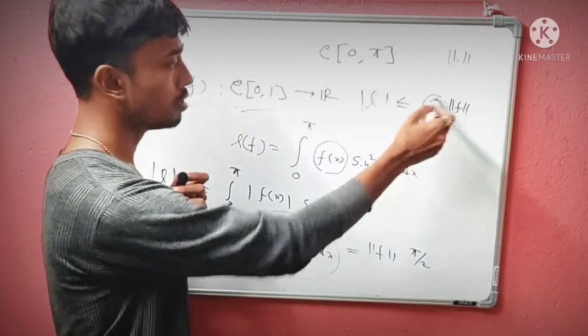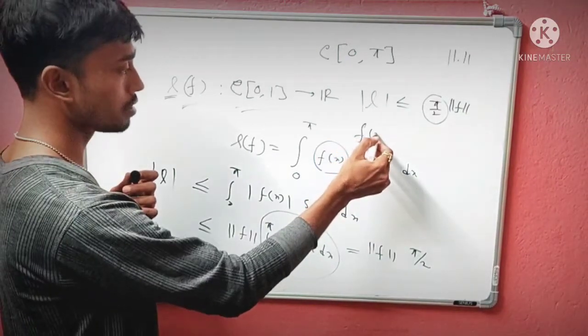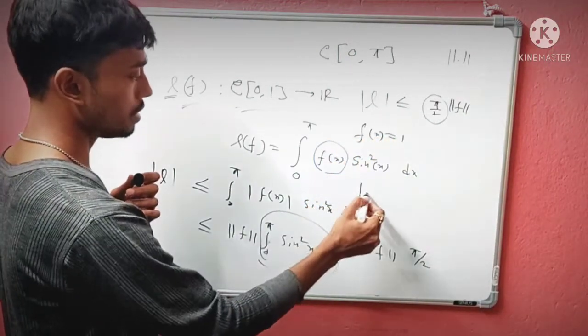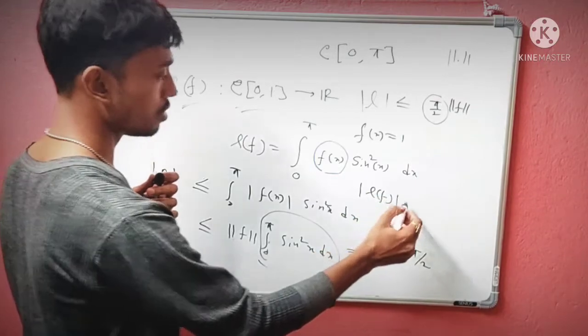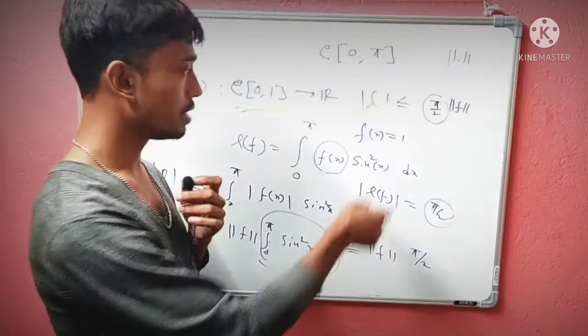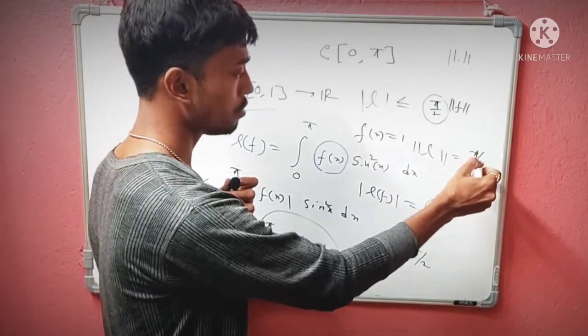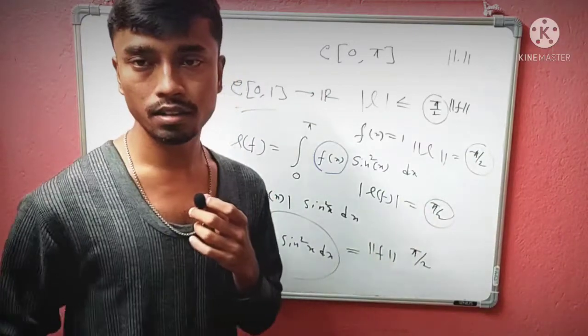You can get that easily: if you take f(x) = 1, then |L(f)| = π/2. From here, as I said earlier, we can claim that the norm of L is π/2.